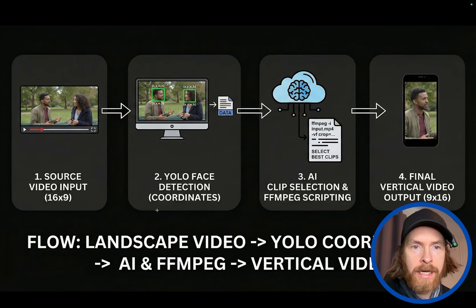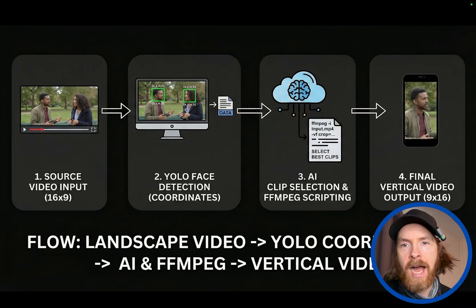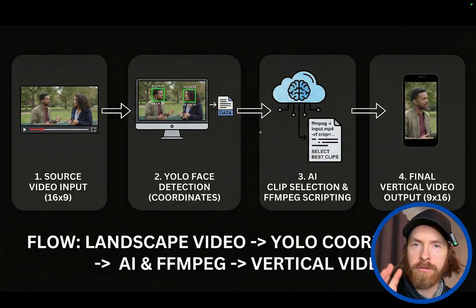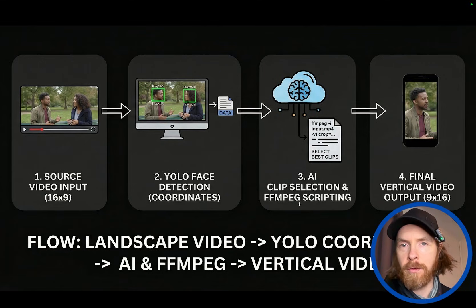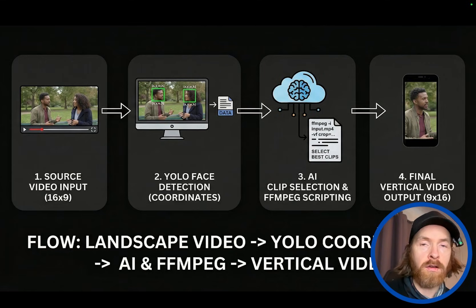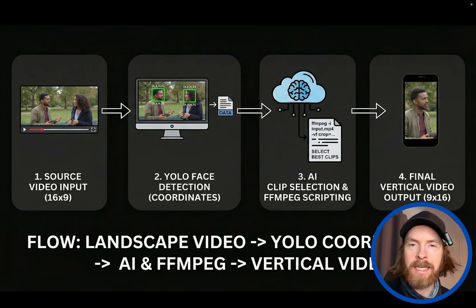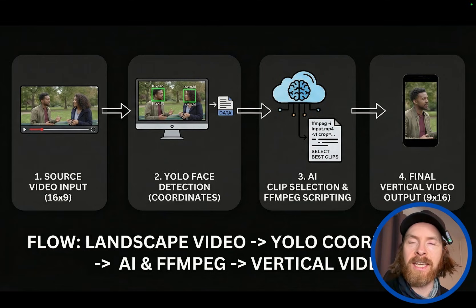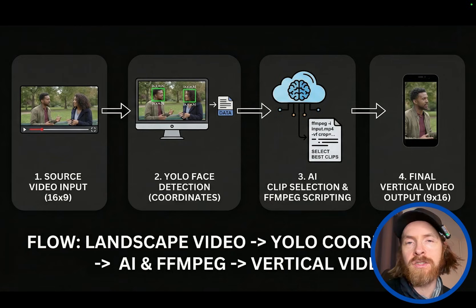When we have the coordinates, we're going to store them and use AI to write commands in FFmpeg to keep track of the coordinates from the landscape video. We're going to select some clips with the workflow we have and then get a final vertical video. Basically this application is going to be a landscape to vertical video converter with reasoning and context awareness, doing a great selection of clips based on user input.